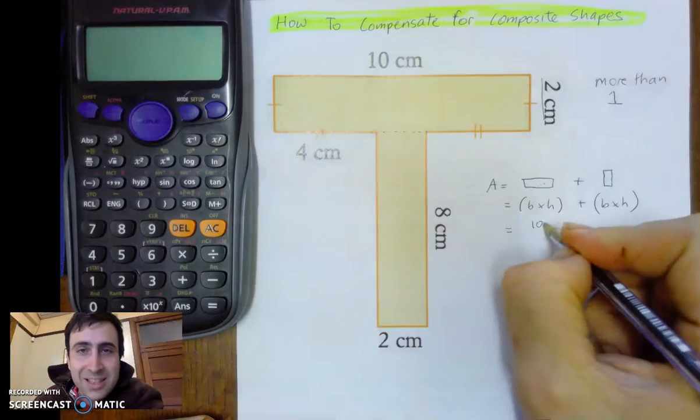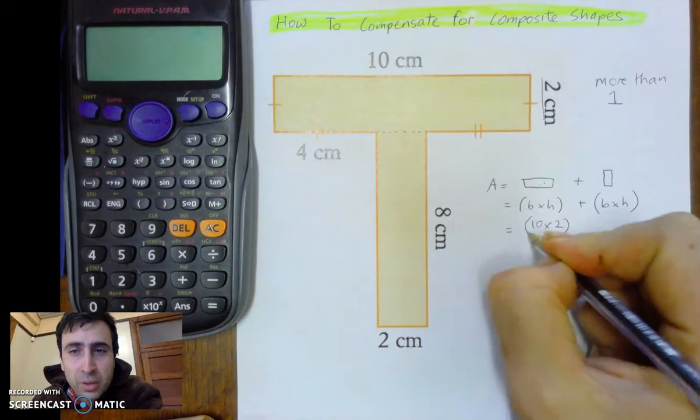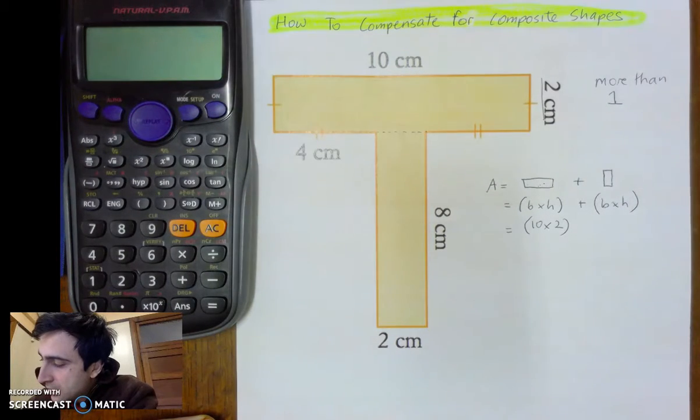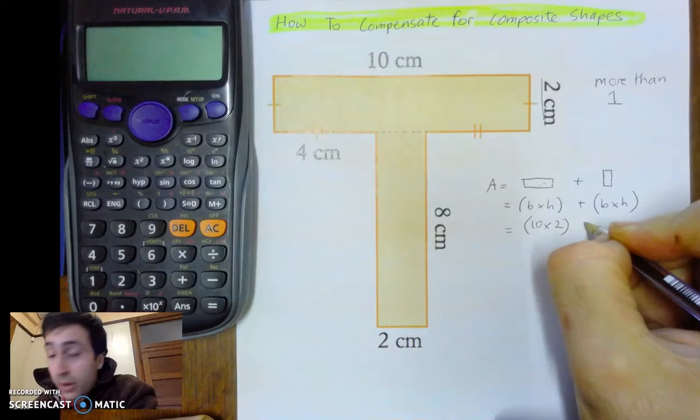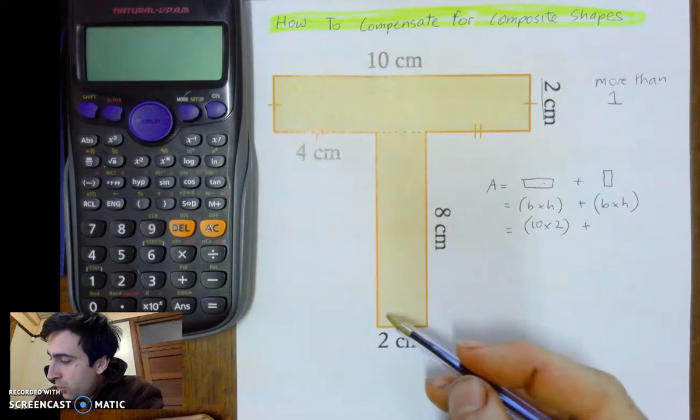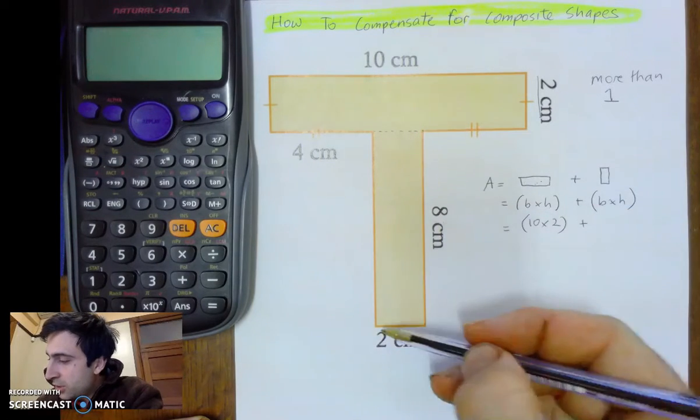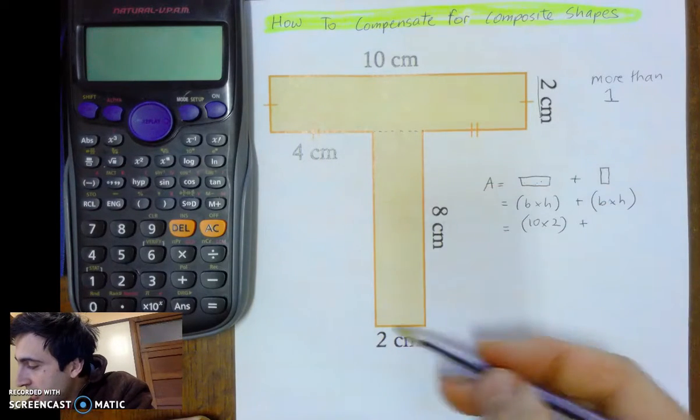And I'm just going to put that in brackets. It doesn't actually matter, but I'm putting it in brackets just so I know that that button's done. Plus. What about the base and the height of the second rectangle? Here's 8. Here's 2. And that will cover this whole section. So it's 8 times 2.